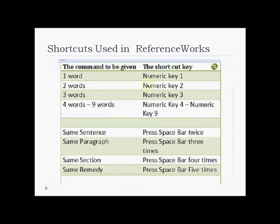In our cases you will learn how to use the different shortcuts and when to use them. For example, there is a 3-word connector which you can use by pressing the numeric key 3. From 4 to 9 words you can use numeric keys 4 to 9. You have the 'same sentence' connector by pressing the space bar twice, 'same paragraph' by pressing it 3 times, 'same section' by pressing it 4 times, and 'same remedy' by pressing it 5 times when performing the search.